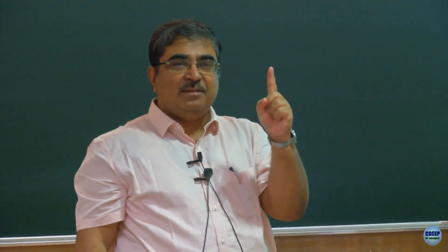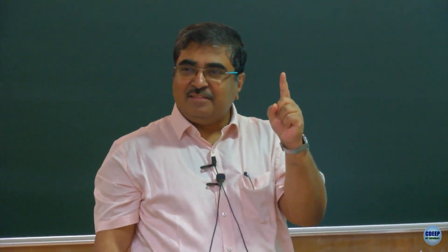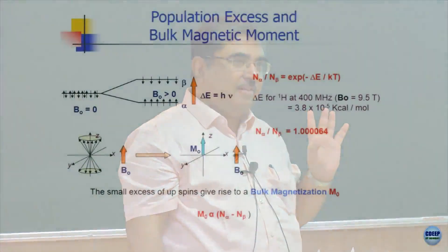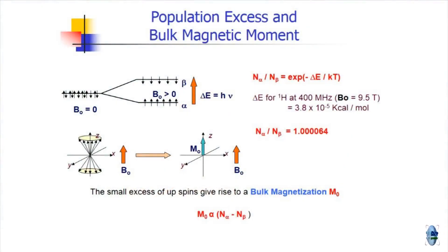The vector sum will point along the Z axis — it will not be very large but it will point upwards. This is called the bulk magnetization. The direction of the magnetic field B0 is along Z, and the vector sum of all these spins is aligned with this magnetic field. We call it bulk magnetization M0, and its magnitude depends on the difference between the populations of alpha spin and beta spin.